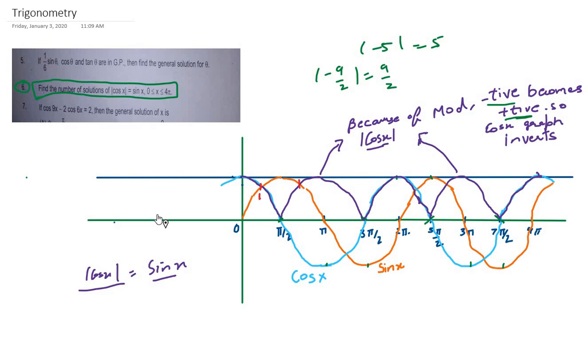Where sin x intersects with |cos x|, it keeps moving, then there's a third intersection here, then a fourth intersection here.